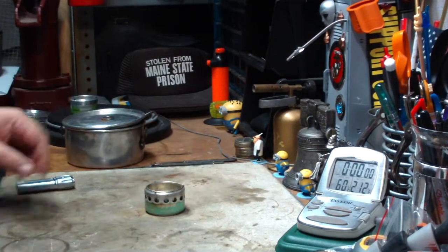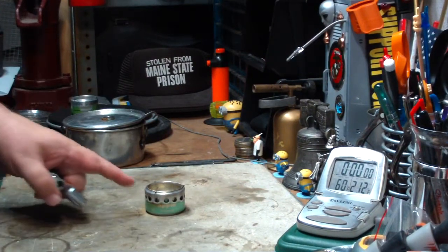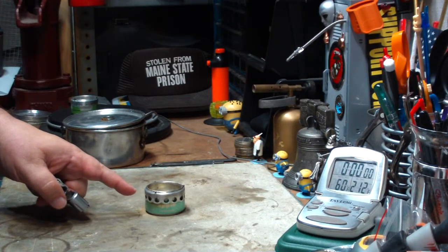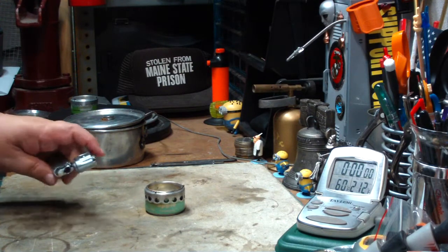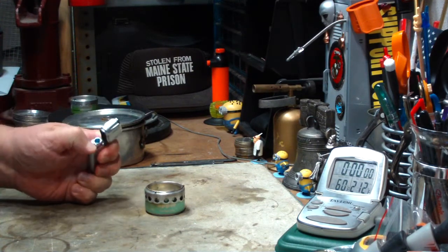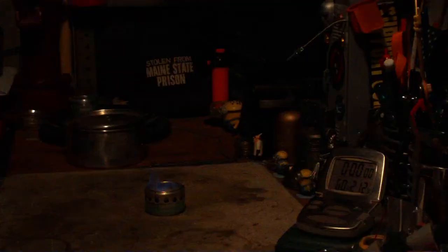Okay, I've got my water prepped. Two cups of water sitting at sixty degrees right now. I have three quarters of a fluid ounce, twenty five milliliters of alcohol in the stove. Let's light it.